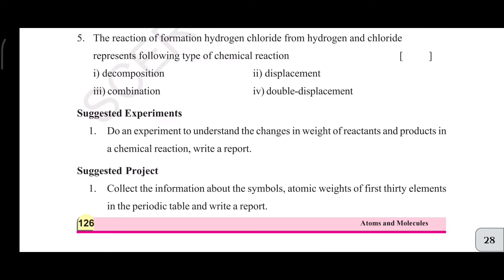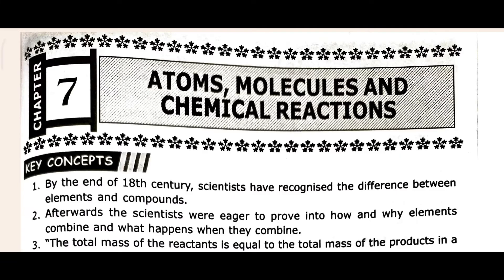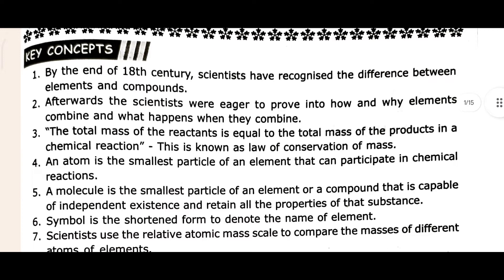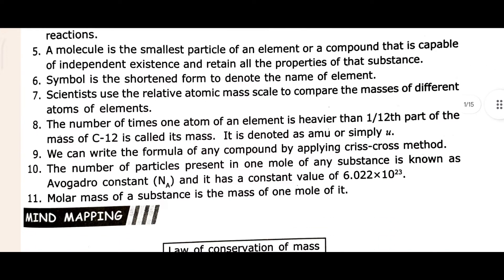So this is our textbook - keywords, question answer, and multiple choice questions, everything we have already seen. I hope this is clear. Now let's move to our answers. Chapter number 7 - Atoms, Molecules and Chemical Reactions. We already saw the questions, now we have to see the answers. First let's see the key concepts and important points, which are already given in your textbook. I'm showing them because lots of children skip the key concepts.